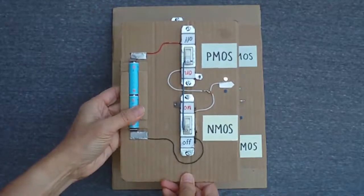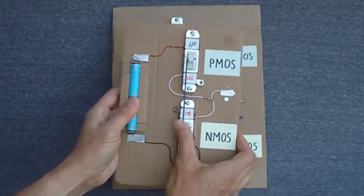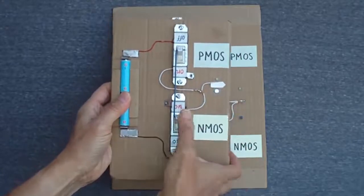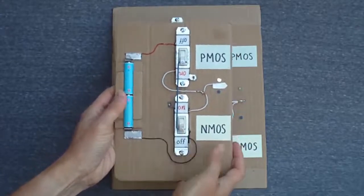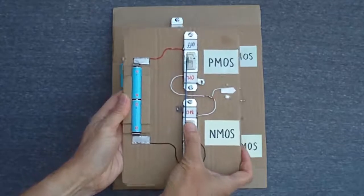In the previous video, we saw how complementary NMOS and PMOS transistors can be connected in a simple way to make the logical inverter function.